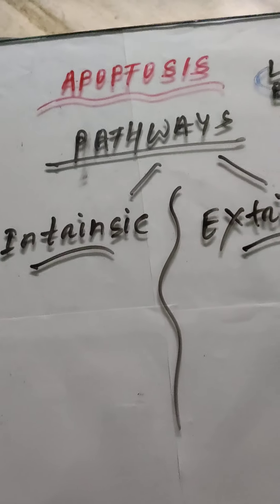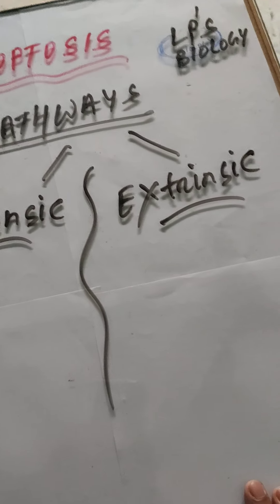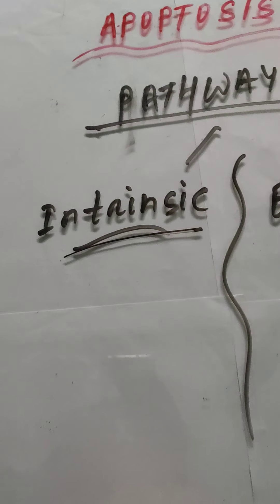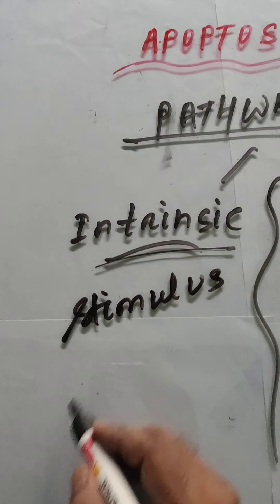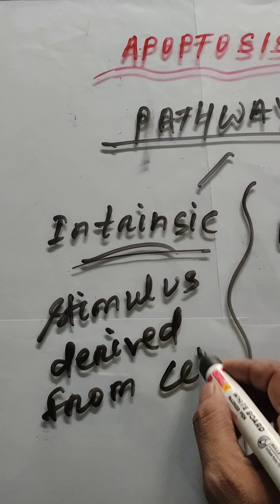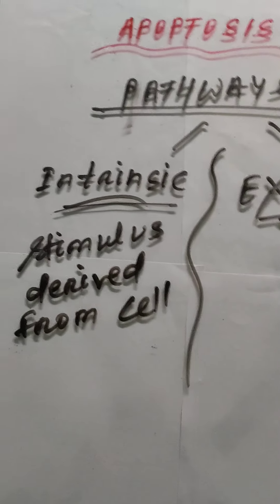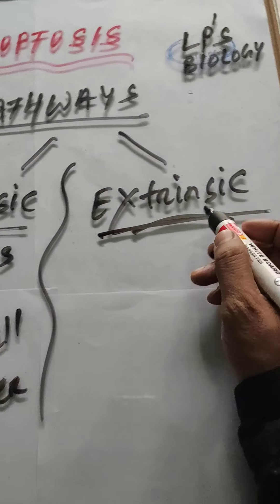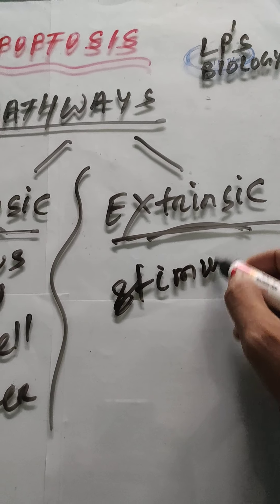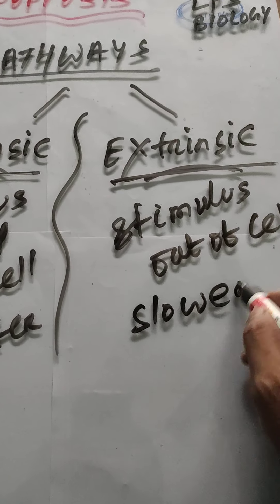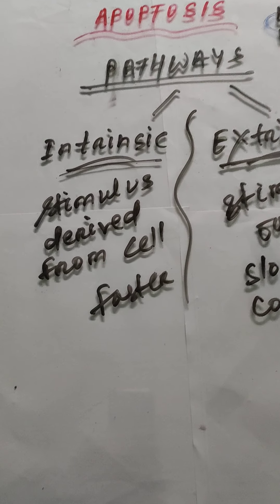There are two basic pathways of apoptosis. The first is the intrinsic pathway — the stimulus for cell death is derived from the interior of the cell, making it a simpler and faster process. The second is the extrinsic pathway — the stimulus is derived from outside the cell from another source, and it is a slower and more complex process. In this video, we will discuss the intrinsic pathway in detail; the extrinsic mechanism will be covered in a coming video.